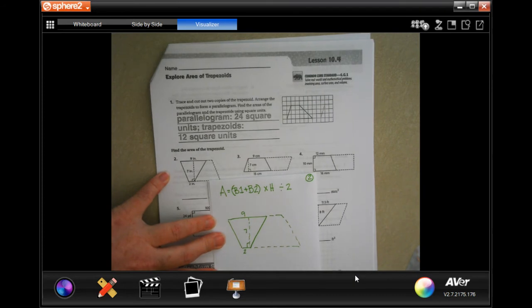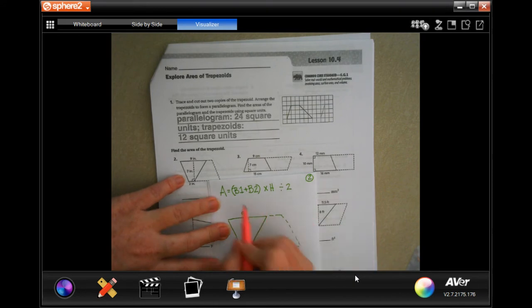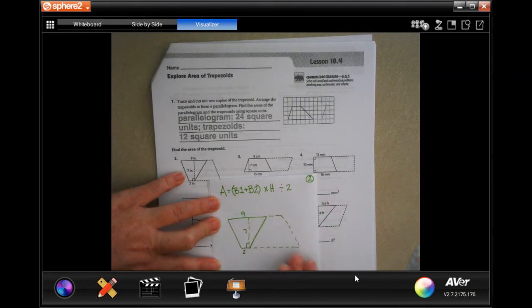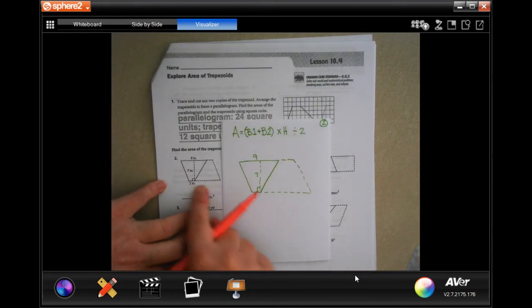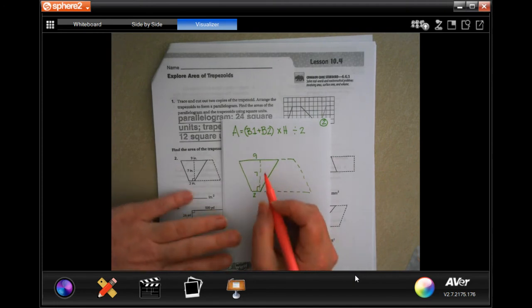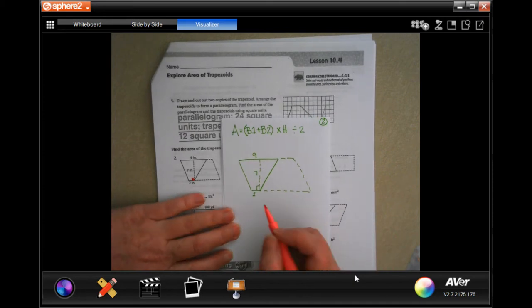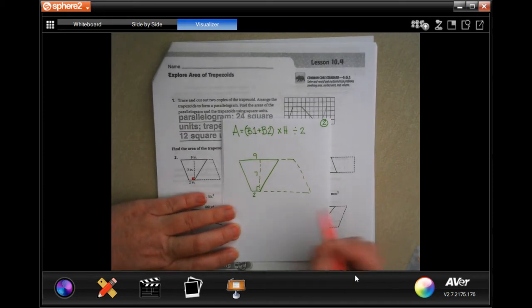To find the area of a trapezoid, the easiest way I can explain it is to do base 1 plus base 2, do that first, and then multiply that by height, and then divide by 2. I'm going to show you what I mean. I did a rough drawing, obviously mine is not to scale. Also, I wanted to show you that these little boxes right here don't mean anything you're going to need to worry about during this. All it means is that's a right angle. So don't worry about those for our lesson.